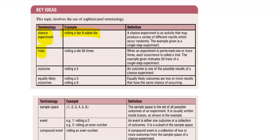The next word is a trial. A trial is when an experiment is performed one or more times. If you only roll the dice once, that's one trial, but you could do it multiple times. For example, rolling a dice 50 times would mean there are 50 trials.